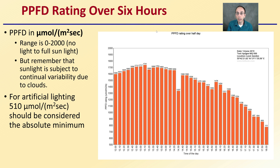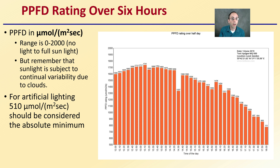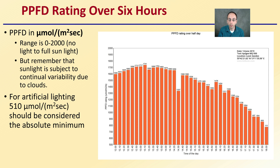For outdoor locations, PPFD in micromoles per meter squared per second ranges from 0 to 2,000 — that's no light to full sunlight. Full sunlight would be 2,000. Sunlight is subject to continual variability due to clouds passing by. We can see here a reading taken every 10-minute interval during the day — a cloud clearly passed by at one point, and we can see the reading drop closer to sunset as the angle of the sun changes.